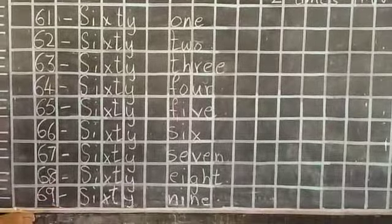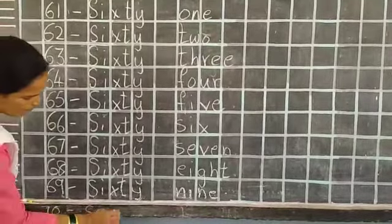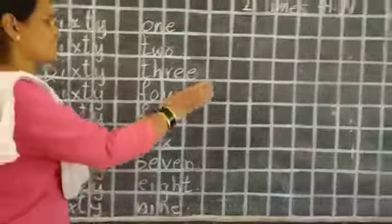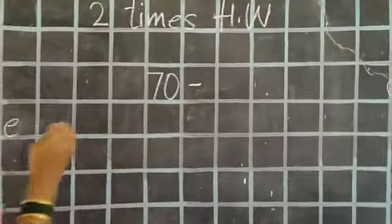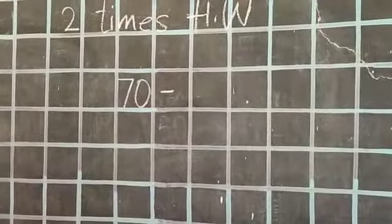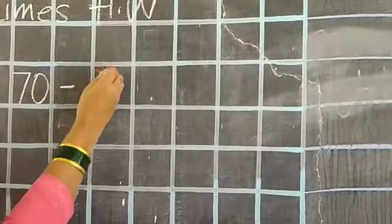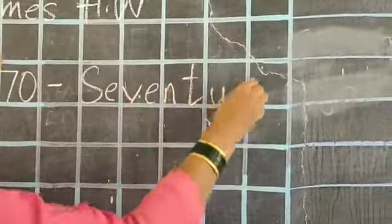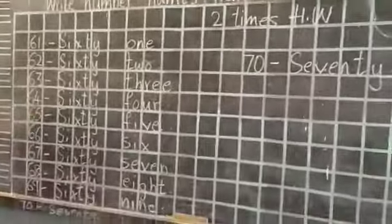Next, after 69, what children? 70. Small dash, capital S-E-V-E-N-T-Y, seventy. 70. Say it loudly and write here. Write it two times. Learn the spelling. Thank you.